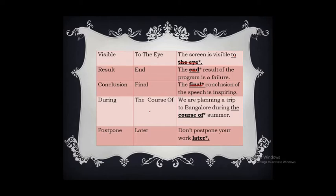'During the course of' — during itself means throughout the course or period of time. So using 'course of' with it makes it an error. You can say: 'We are planning a trip to Bangalore during summer' or 'in the course of summer.' 'Postpone later' — postponing means doing something later, so indicating 'later' again is superfluous. The correct form is: 'Don't postpone your work.'